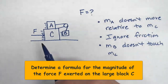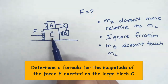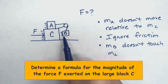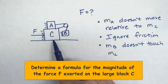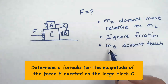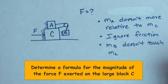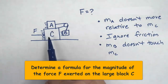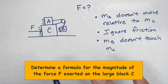In this force problem, we're going to figure out the magnitude of the force. This force is pushing on box C. On top of box C is box A. Box A is connected to a string looped around a pulley, and the string is connected to box B. The key constraints are: mass A does not move relative to mass C, we ignore friction, and mass B doesn't touch mass C. This first constraint tells us that these objects have the same acceleration.